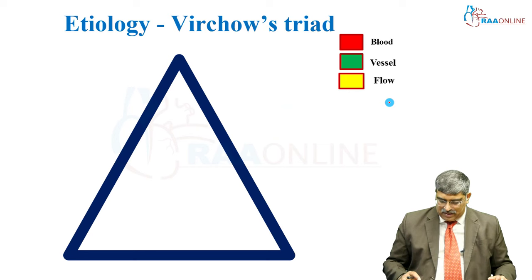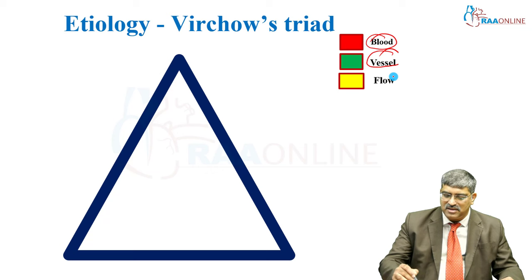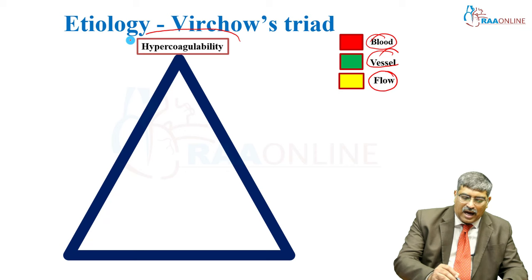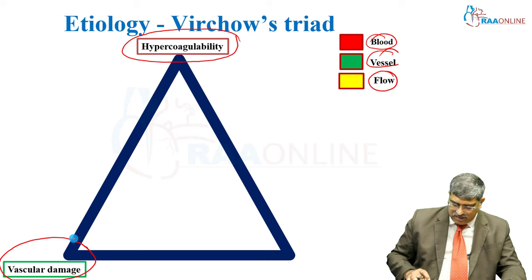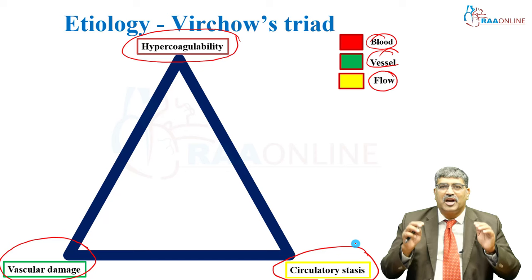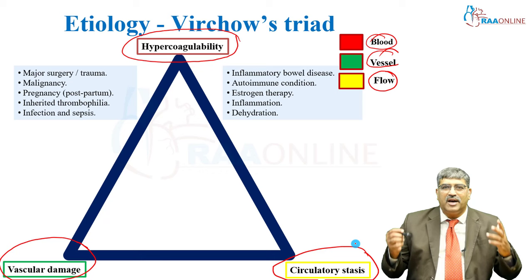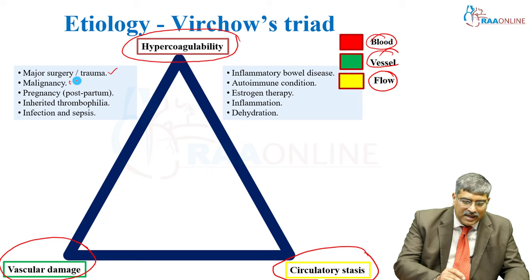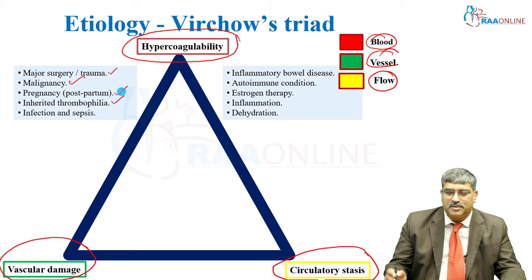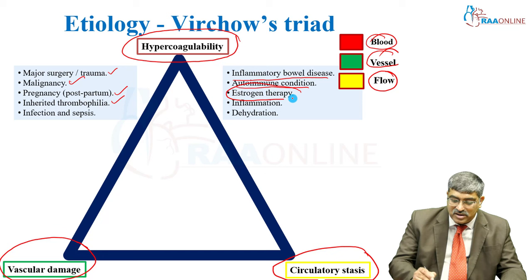Coming to Virchow's triad, three things are very important: your blood flow, the vessel status, and how the flow of blood is happening. You have hypercoagulability at one end of the triangle, vascular damage at the other, and circulatory stasis at the third. These three things are required for thrombus formation. Hypercoagulability occurs with major surgery and trauma, malignancy, pregnancy, inherited thrombophilia, infection and sepsis, inflammatory bowel disorders, autoimmune conditions, estrogen therapy, inflammation, and dehydration.